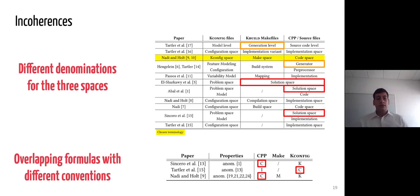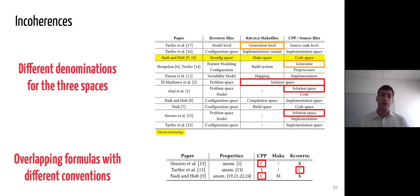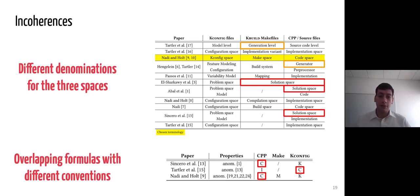Finally, differences also appear in the denominations given to different spaces across papers describing the Linux build system, and also in the naming conventions used in formulas for identifying the different anomalies. These incoherences hamper the comprehension of both the build system and the studied anomalies, which calls for a need for realignment.